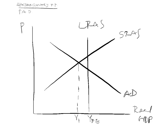The government will run expansionary fiscal policy by increasing aggregate demand. We are going to shift the aggregate demand curve outwards. Essentially, all we are going to do is shift aggregate demand out, and we get to our long-run equilibrium — we get out of our recession.